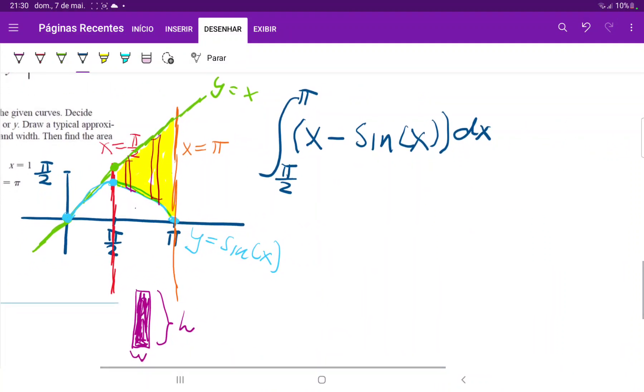So now all we have to do is integrate it. It's pretty simple. This is just x squared over 2, and then the integral of sine x is minus cosine. So we have minus minus cosine, which will just give us positive cosine of x evaluated from pi over 2 to pi.